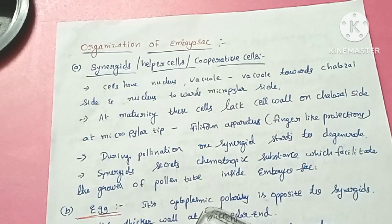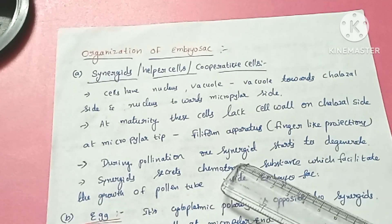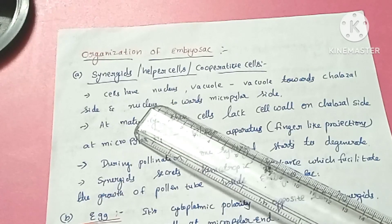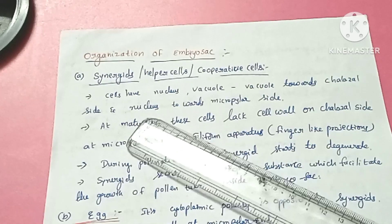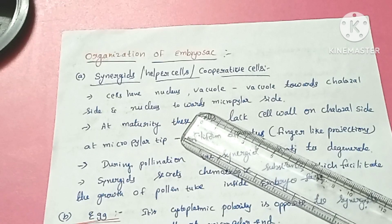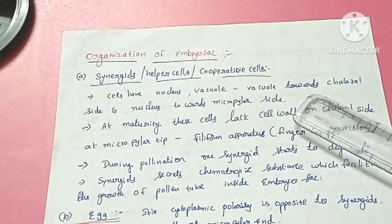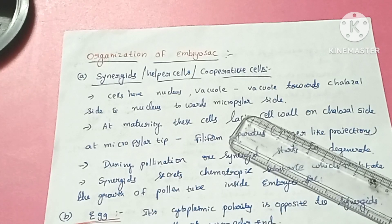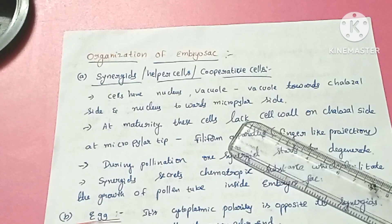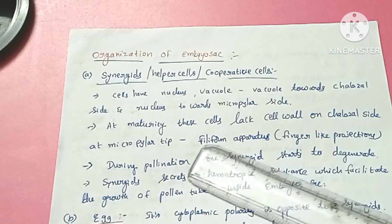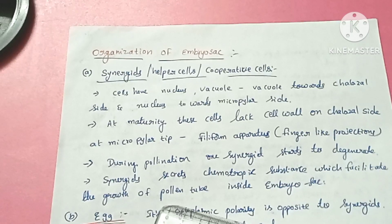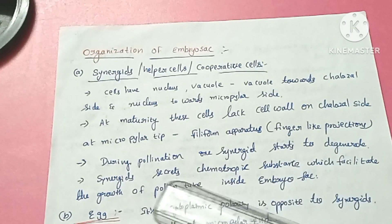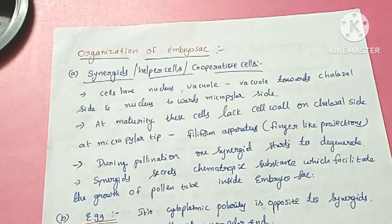Now for the organization of the embryo sac. First, the synergids — also called helper cells or cooperative cells. These cells have a nucleus and a vacuole. The vacuole is present towards the chalazal side and the nucleus is towards the micropylar end. At maturity, the cells lack a cell wall at the micropylar tip, where there are finger-like projections called filiform apparatus.